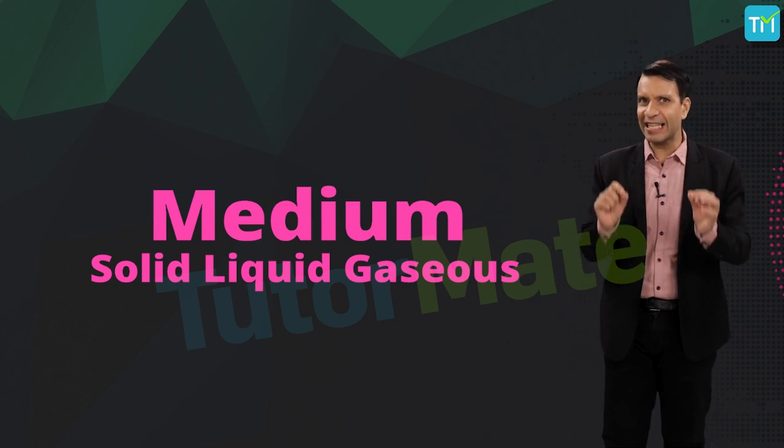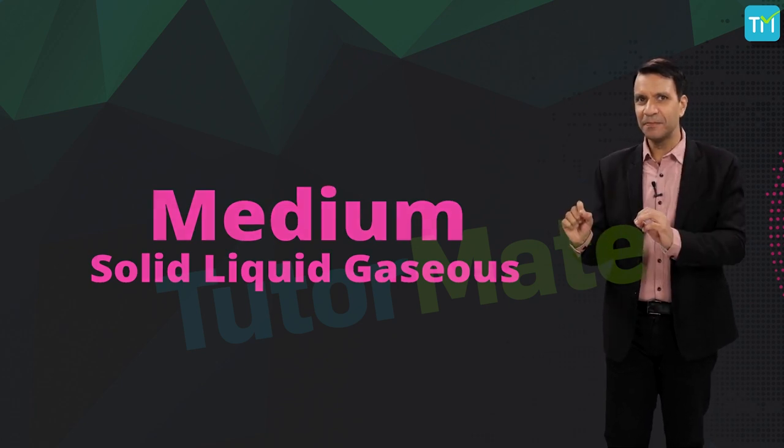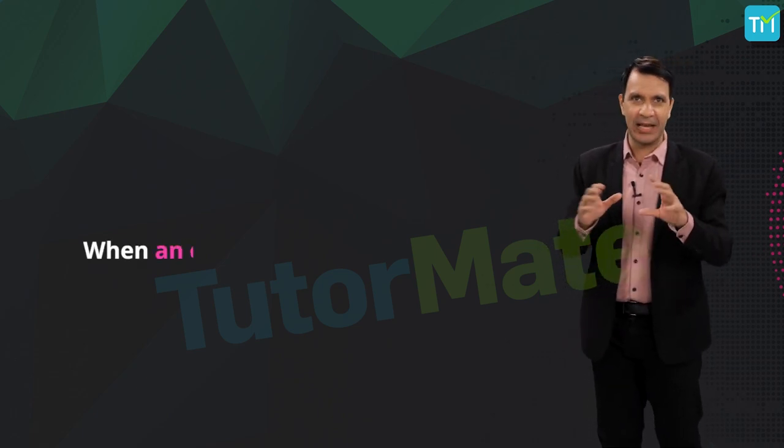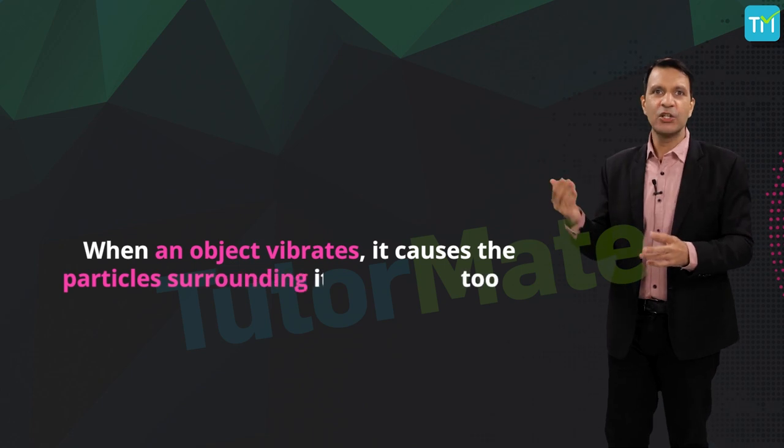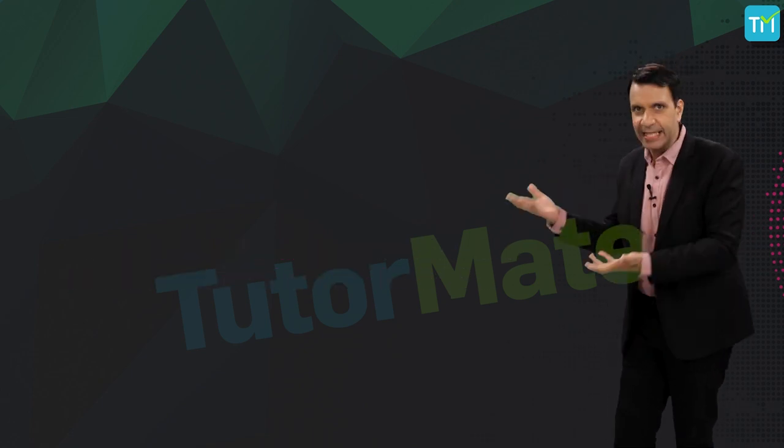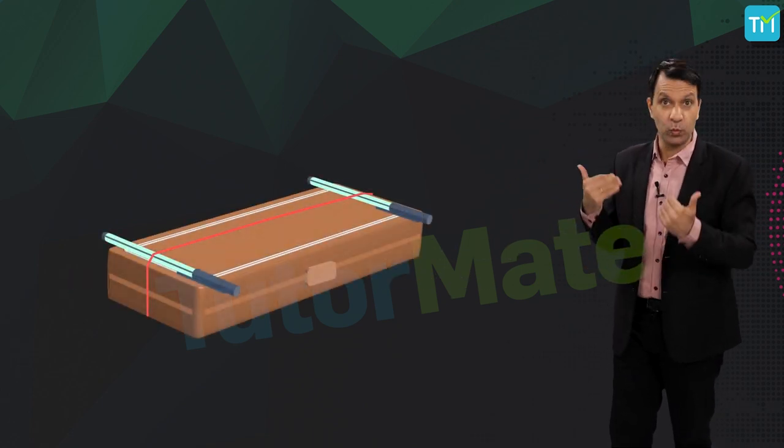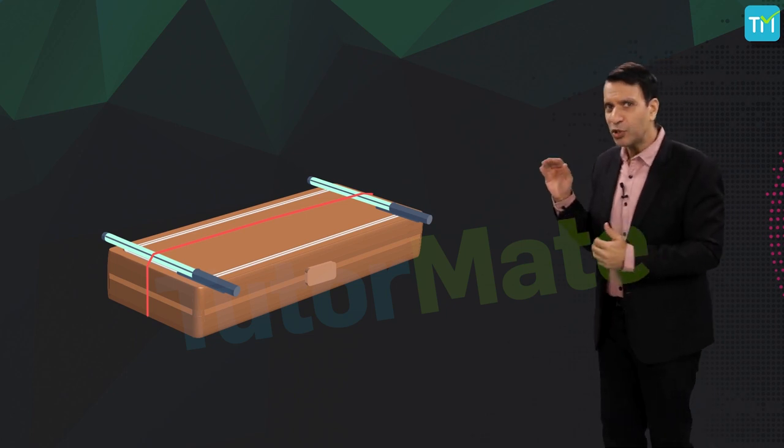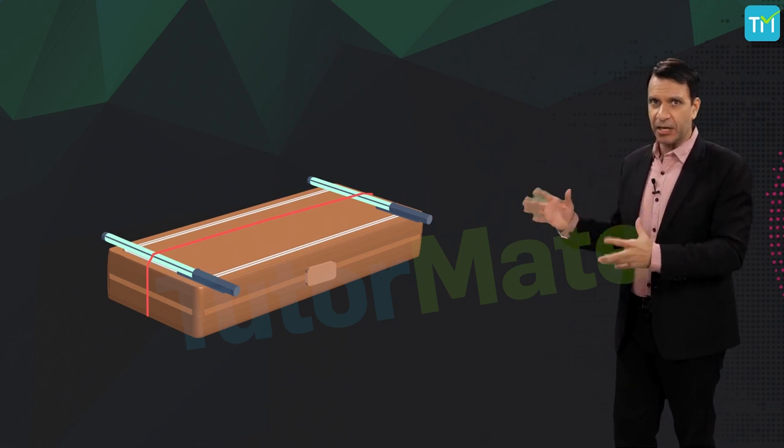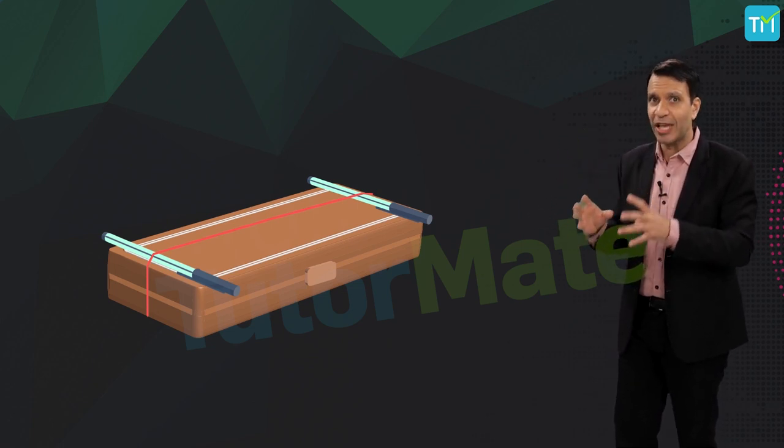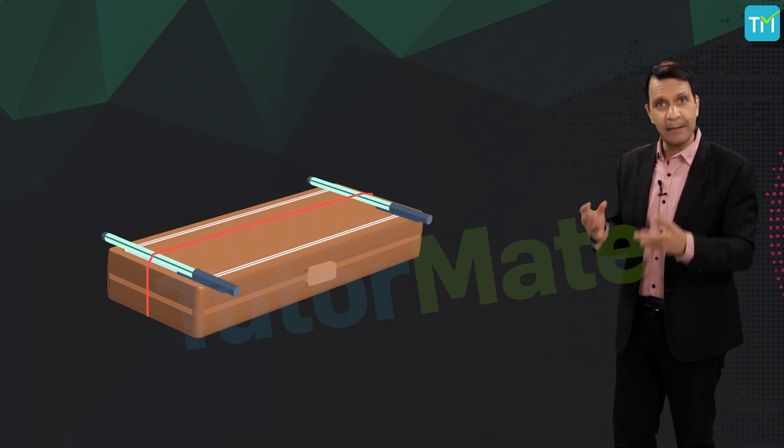Now, how exactly does this sound travel? So, this is what happens when an object vibrates. It causes the particles surrounding it to vibrate too. Take the example of the rubber band instrument that we built. The moment you pluck the rubber band, it starts vibrating. This vibrating rubber band will cause the particles of air around it to vibrate too.